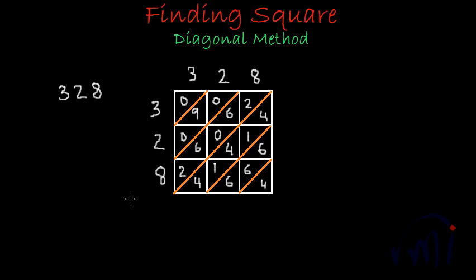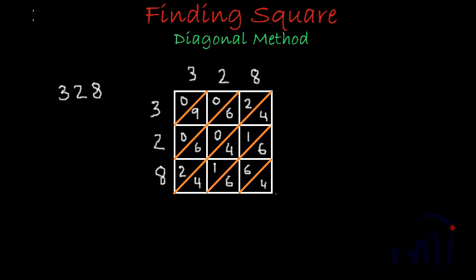We start from the bottom-right point and go in the diagonal direction. The area below the first diagonal holds the units place: the number is four. Then the area between the next two diagonals has three sixes: six plus six is twelve, twelve plus six is eighteen — so we write eight and carry forward one.